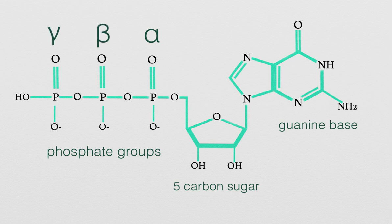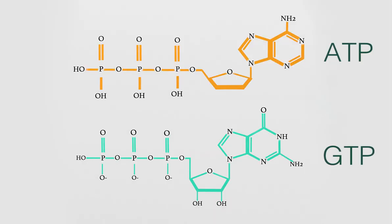The structure of GTP is very similar to that of ATP, which is also a nucleotide composed of an adenine base attached to a sugar with three phosphate groups. Adenines and guanines are both purines, meaning their chemical structures include two fused aromatic rings.